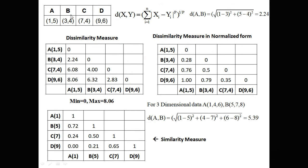Now consider two-dimensional data: A(1,5), B(3,4), C(7,4), D(9,5). We take the Euclidean distance (p = 2) between A and B. Here n = 2, so we take the square root of the sum of squared differences: sqrt((1−3)² + (5−4)²) = 2.24. Using this formula, we calculate all pairwise Euclidean distances to form a dissimilarity adjacency matrix. The result is again not normalized, so we divide by the maximum value 8.06 to get values between 0 and 1. From the normalized dissimilarity matrix, the similarity matrix is obtained by subtracting each value from 1.